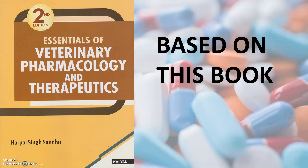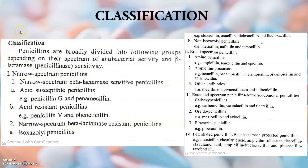We will be classifying penicillins based on this book — the Veterinary Pharmacology and Therapeutics by Harpel Singh Sand. Penicillins are broadly divided into the following groups depending upon their spectrum of antibacterial activity and beta-lactamase sensitivity. Beta-lactamase is an enzyme produced by the bacteria which can cleave the penicillin, so the penicillin will not have any action on those bacteria. These enzymes are also called penicillinase because they break penicillin.